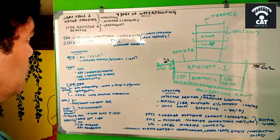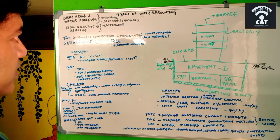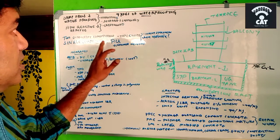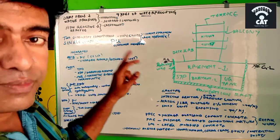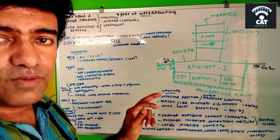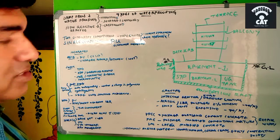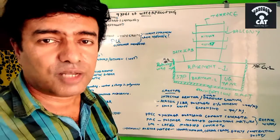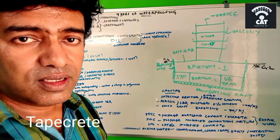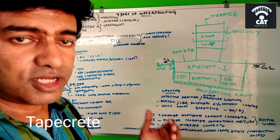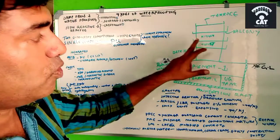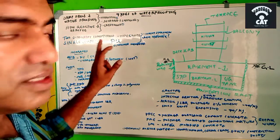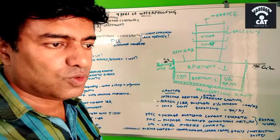Based on location and surface exposure, we can categorize waterproofing materials into two types: two-component cementitious waterproofing material and single-component waterproofing material. The two-component cementitious waterproofing treatment is also called taperit, and it is usually used in smaller areas such as kitchens and toilets.